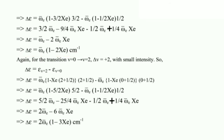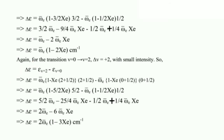For the transition v = 0 to v = 2 (ΔV = +2) with small intensity, delta epsilon = epsilon(v=2) − epsilon(v=0), which on simplification gives delta epsilon = 2 × omega_e_bar × (1 − 3xe) cm⁻¹.